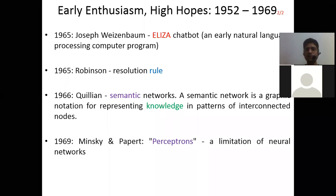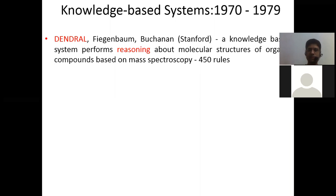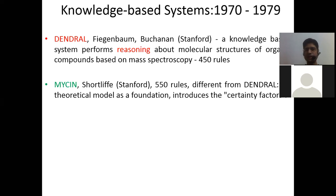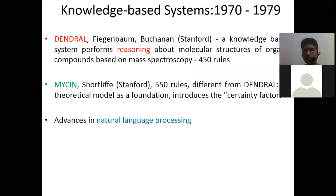In 1969 we have perceptron limitations. Then from 1970 to 1979 we have expert systems, including Dendral — used in the domain of chemistry with 450 rules to find the structure of an organic compound — and Mycin, which contains 550 rules to identify diseases. Mycin was different from Dendral because it had no theoretical model as a foundation and introduced certainty factors.